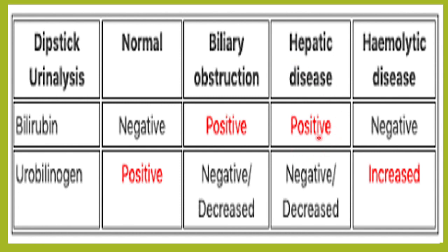In hepatic disease, urine bilirubin may be positive because the damaged liver cannot completely excrete bilirubin into the bile ducts, allowing some to appear in the urine. Urobilinogen may be decreased or absent in hepatic disease because the liver cannot conjugate and send bilirubin adequately, so less bilirubin enters the intestine and less urobilinogen is formed.